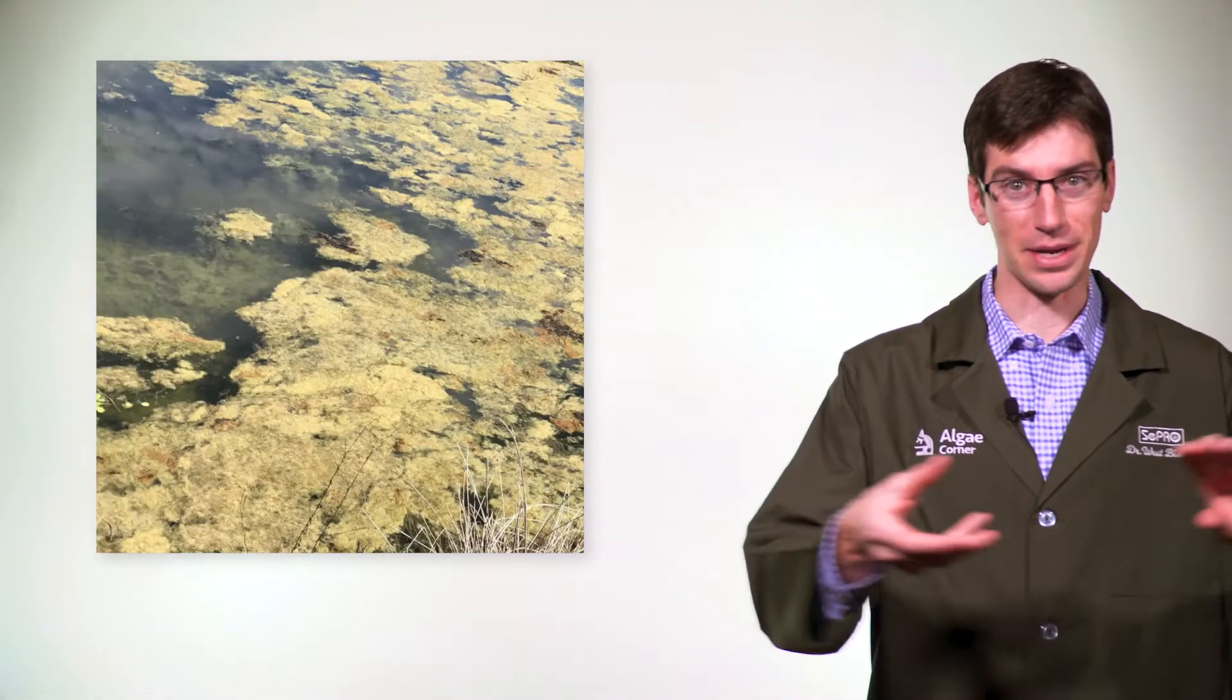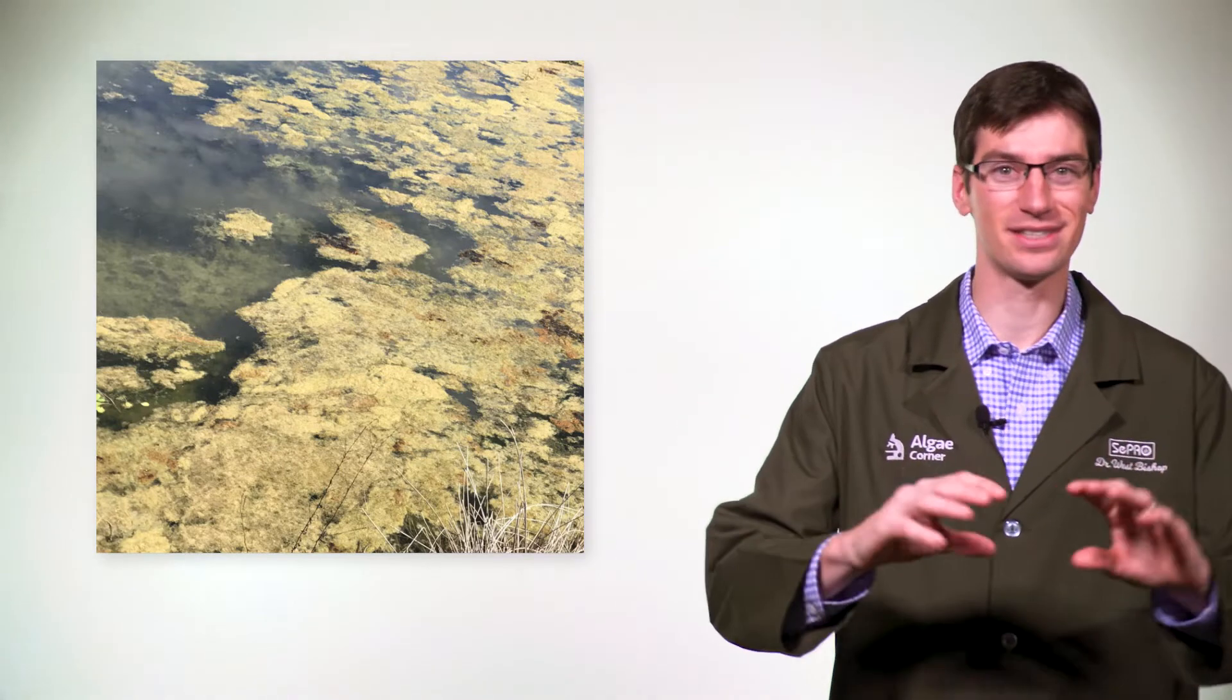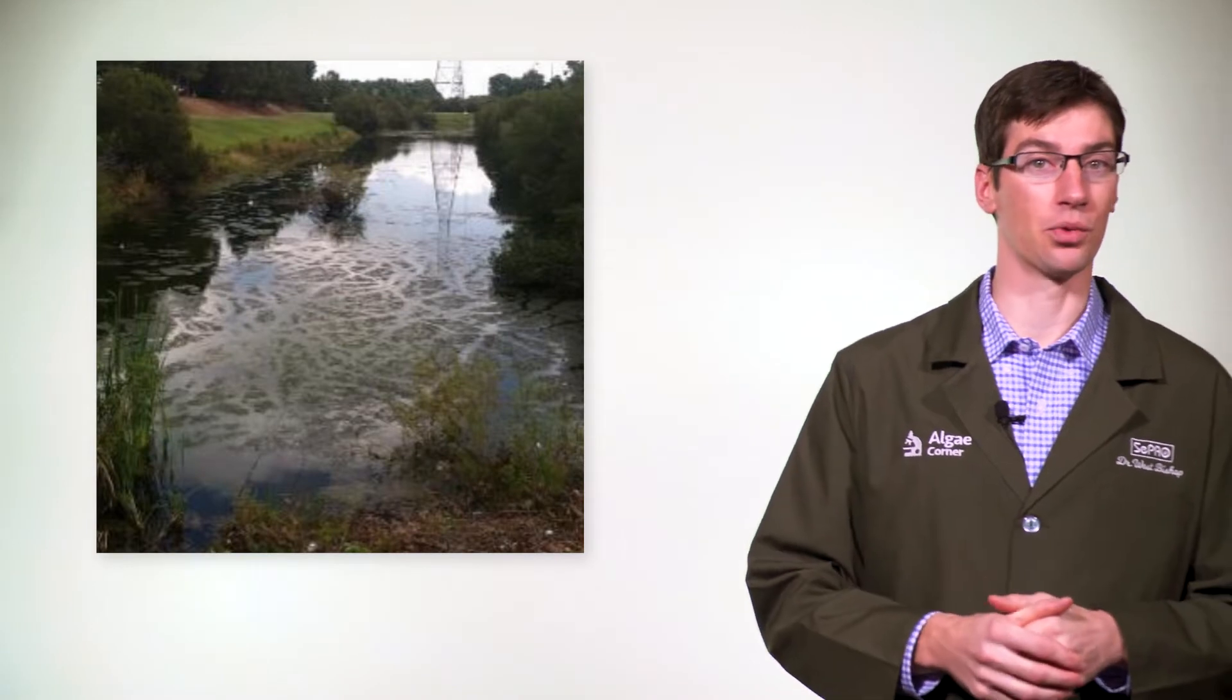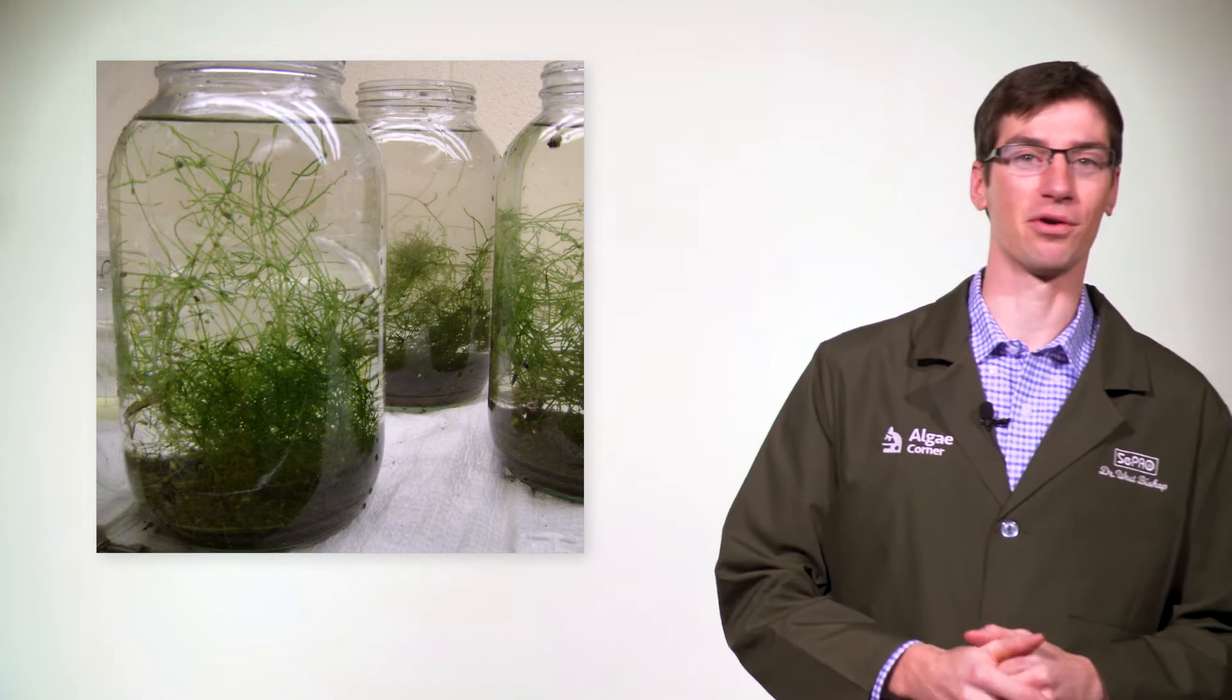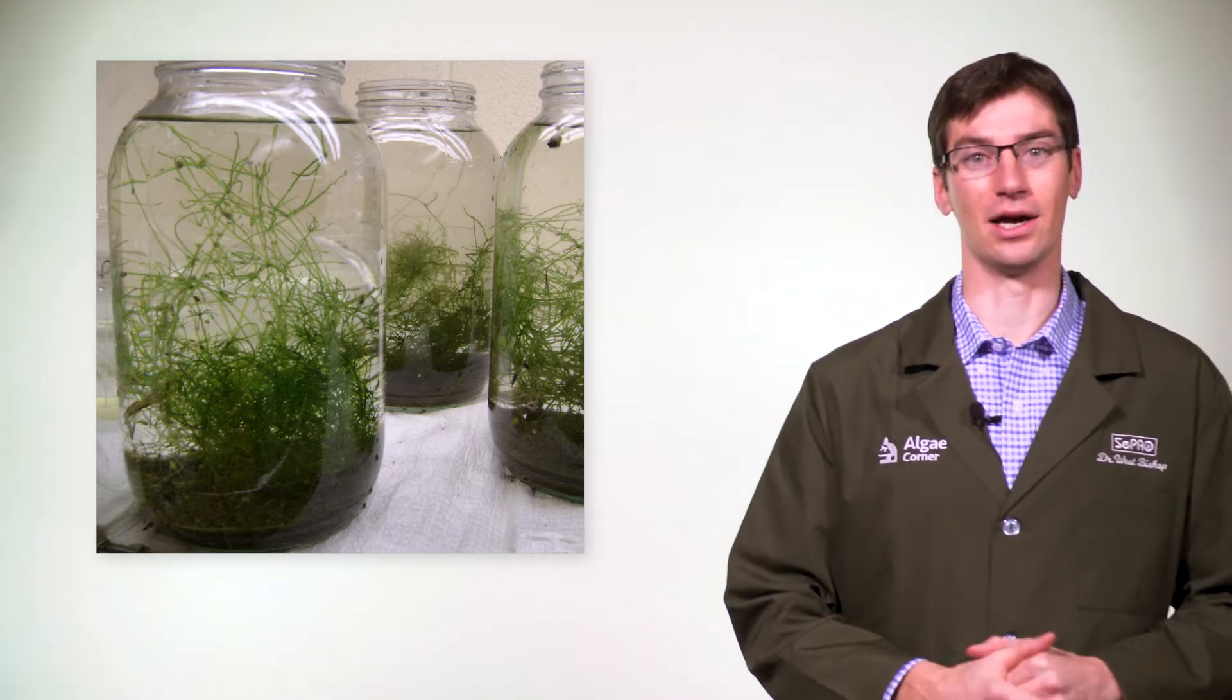One of the key things is first describing it as planktonic, which is distributed through the water column giving color to the water, or filamentous—these could be mat-like entanglements that show up on the bottom or surface, or plant-like macroalgae. These grow up from the bottom of the system. They're often confused with aquatic macrophytes, but these are actually a group of macroalgae.